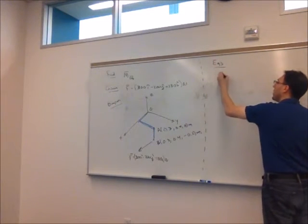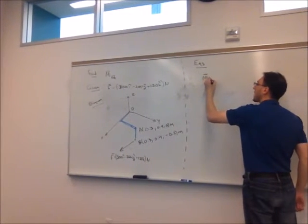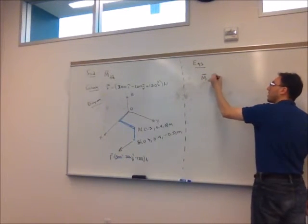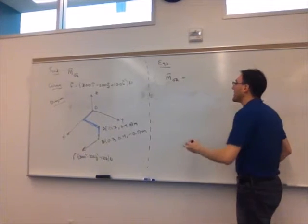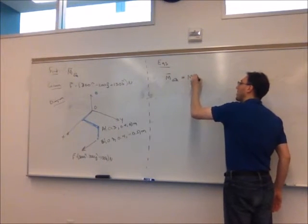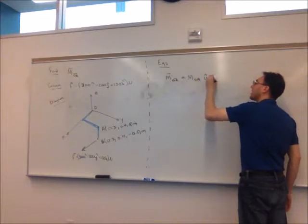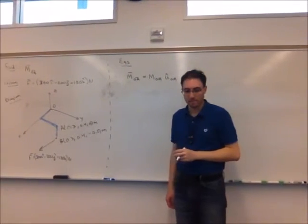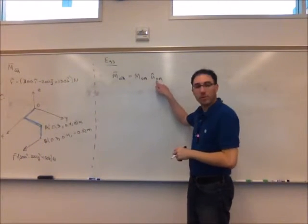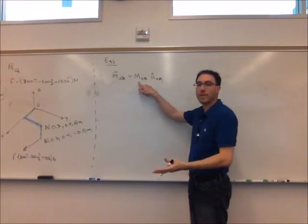So we want to know the moment around axis OA, again as a vector. So to do that we're going to need the magnitude of the moment around OA and we're going to multiply that by the direction from O to A. This we're going to be able to find. This we don't know yet.